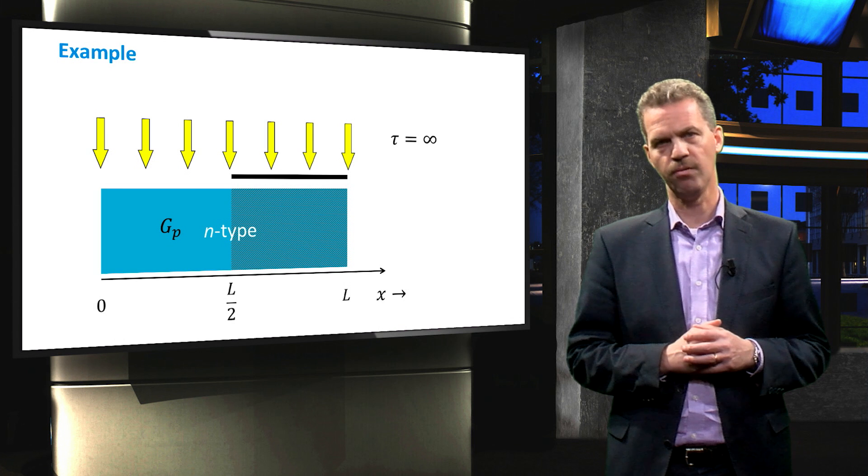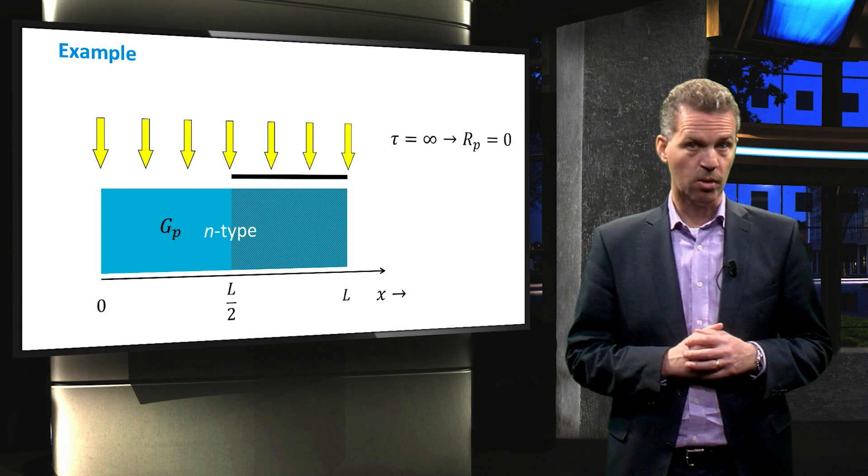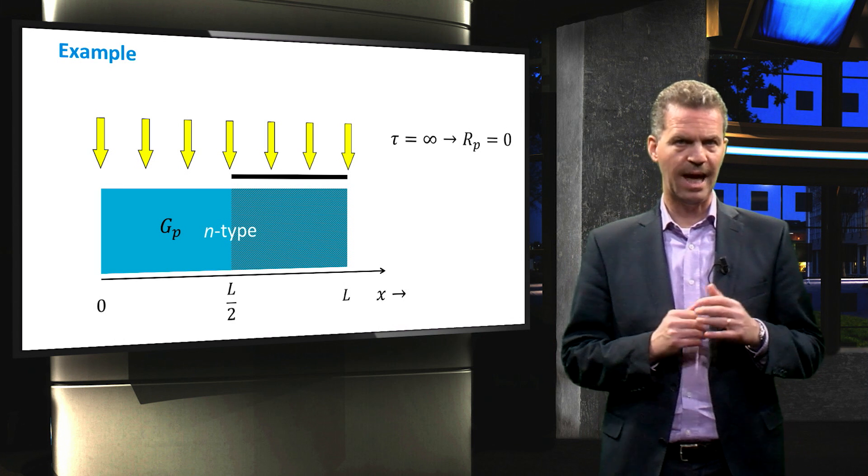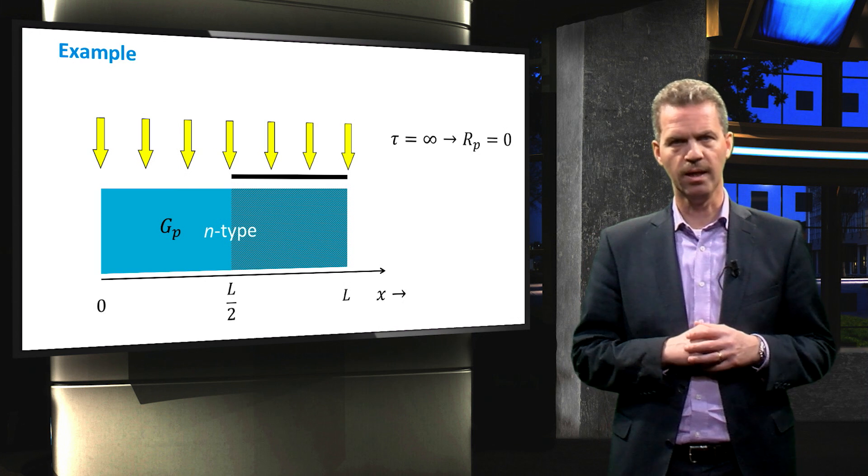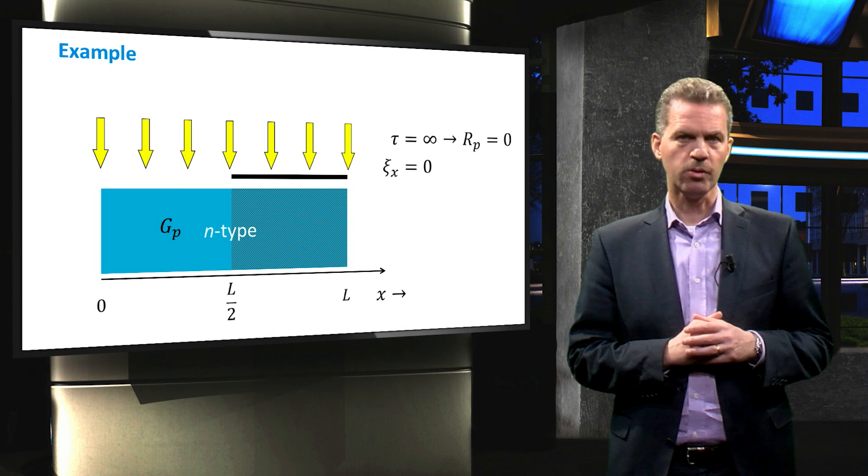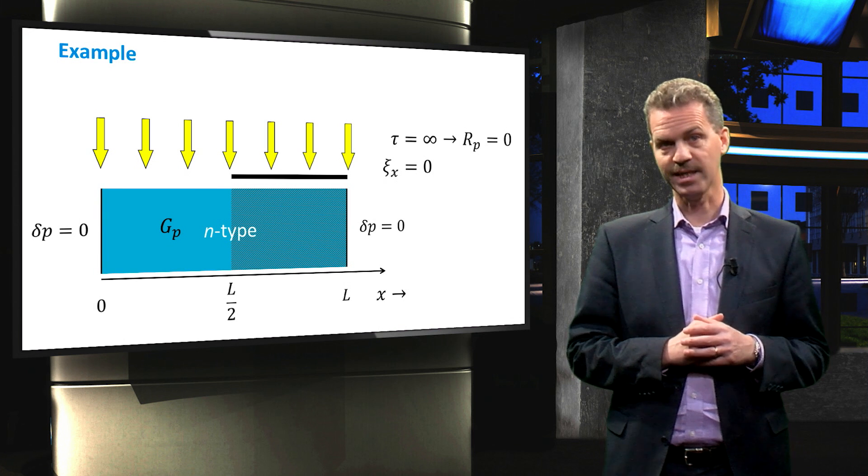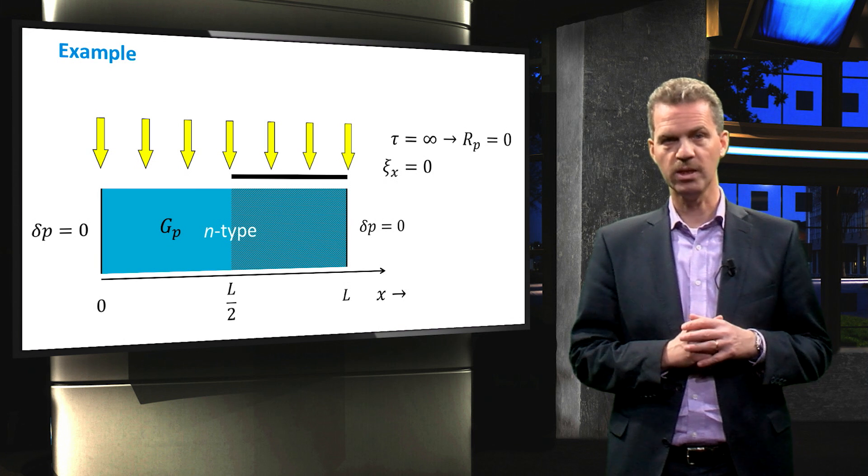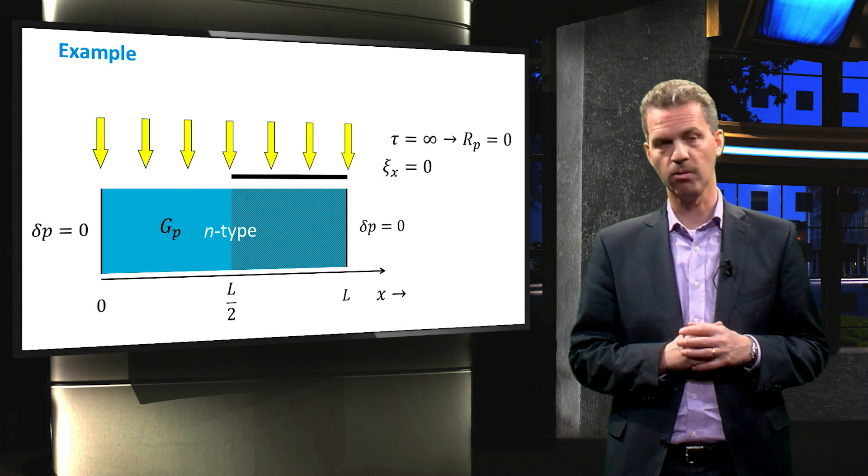For the sake of simplicity, we assume an infinite carrier lifetime, which leads to no recombination. Of course it is not realistic to assume the lifetime to be infinite, but it will allow us to understand the application of the ambipolar transport equation without delving into detailed math. For this example, we also assume that the electric field strength is zero. And finally, we take the excess carrier concentration to be equal to zero at the boundaries of the slab, which is often the situation at the interface between a metal and semiconductor.